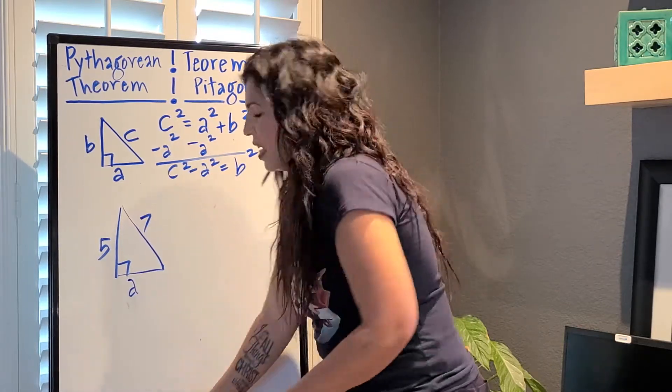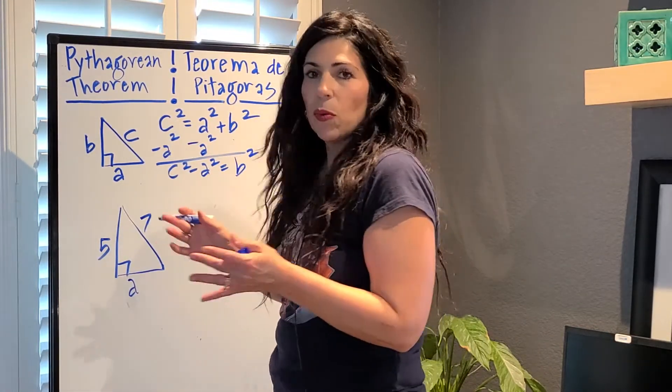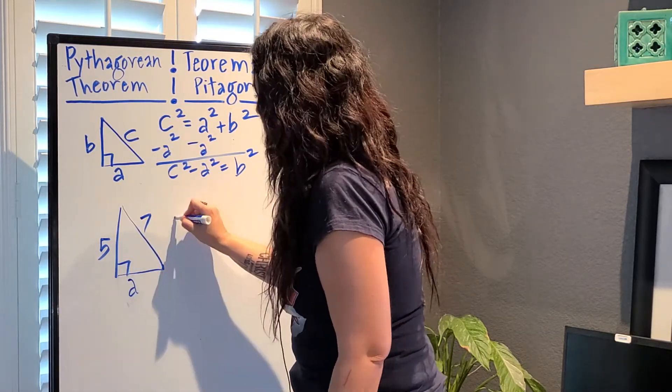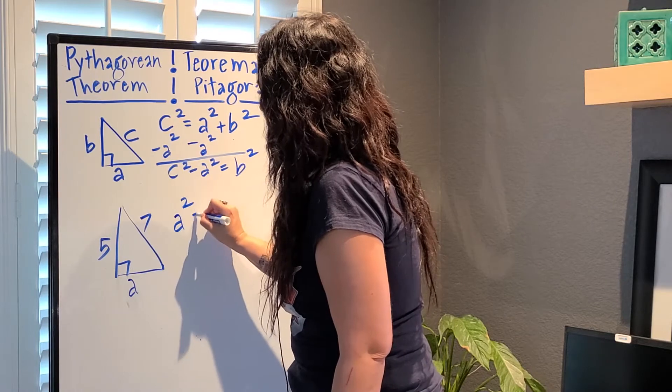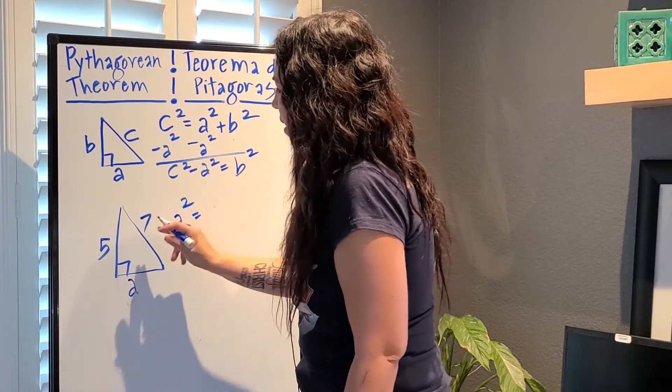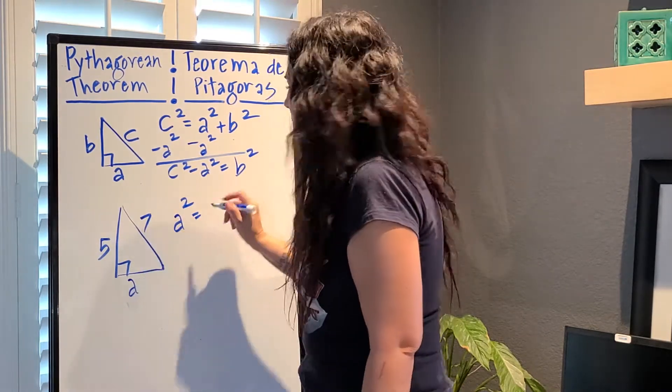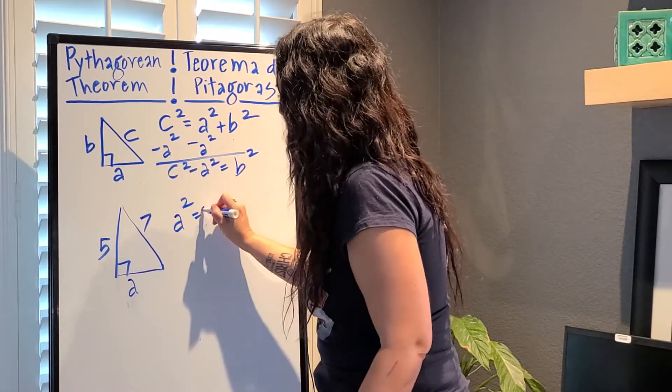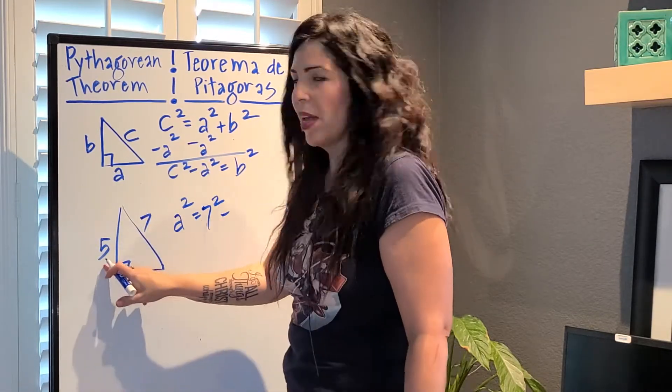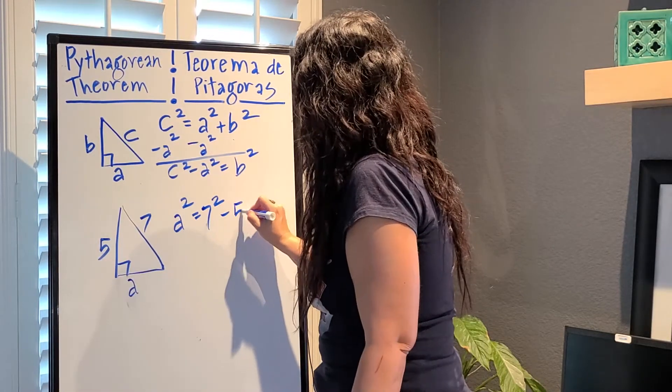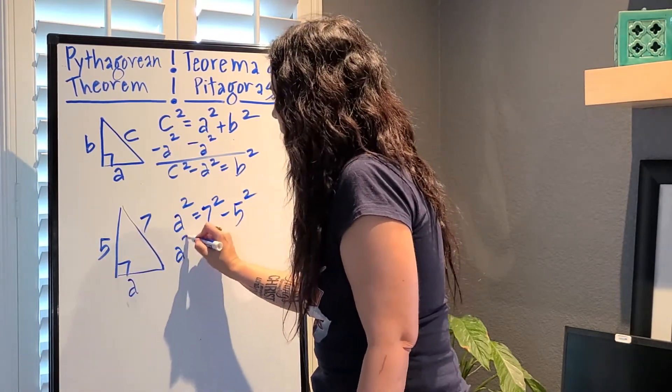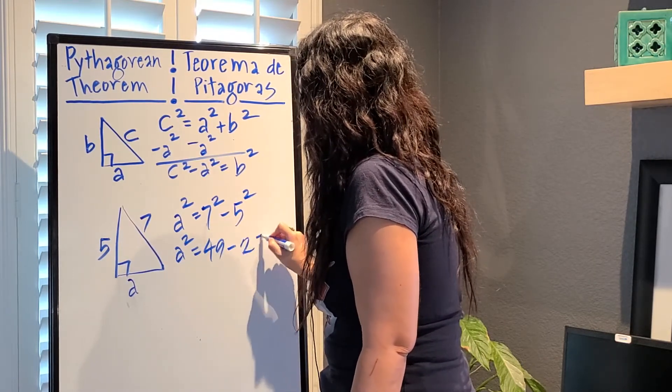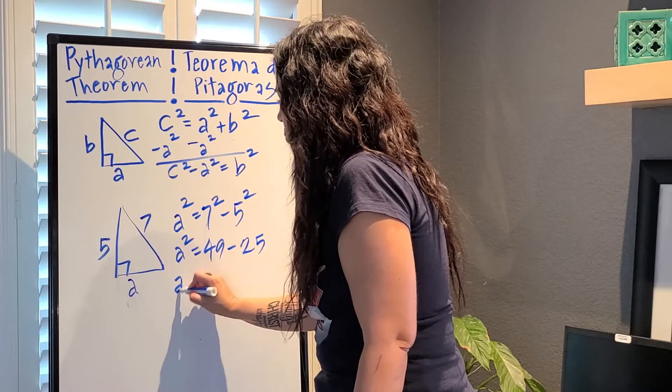Y entonces, sin pensarlo, so even without thinking about the formula, I know that I can take to find A squared. Yo sé que solamente tengo que hacer A al cuadrado vale la C al cuadrado. So it's 7 squared minus 5 squared, 5 al cuadrado. And we have 49, 49 minus 25.